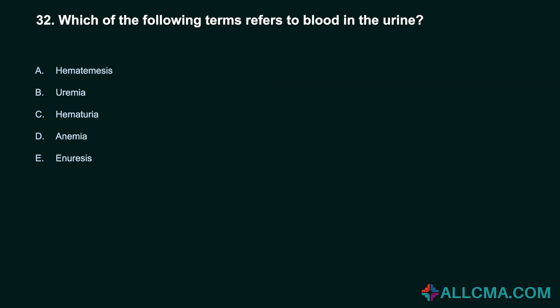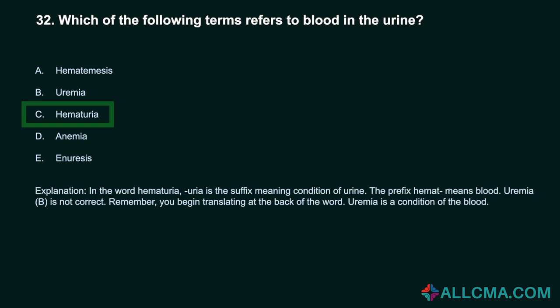Question 32: Which of the following terms refers to blood in the urine? Correct answer: C, hematuria. In the word hematuria, -uria is the suffix meaning condition of urine, and the prefix hemat- means blood. Uremia is not correct; translating from the back of the word, uremia is a condition of the blood.